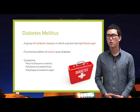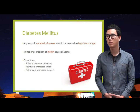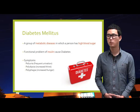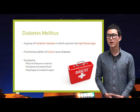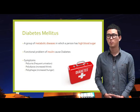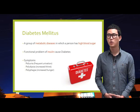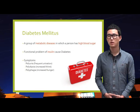Diabetes mellitus, or simply diabetes, is a group of metabolic diseases in which a person has high blood sugar, either because the pancreas does not produce enough insulin or because cells do not respond to the insulin that is produced. This high blood sugar produces the classical symptoms of polyuria (frequent urination), polydipsia (increased thirst), and polyphagia (increased hunger).